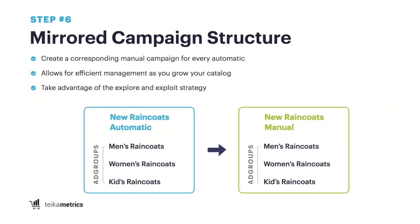Now that we've touched on automatic and manual and the benefits of both, let's go into how that relates to campaign structure. We like to call this the explore and exploit strategy, where you're able to take advantage of the entire sponsored products platform. Setting up a mirrored campaign structure — having an automatic campaign and with the right naming convention, basically the same exact manual campaign. Take all of your products, group them by product type and objective, and when you create your first set of campaigns, create two: one automatic and one manual.